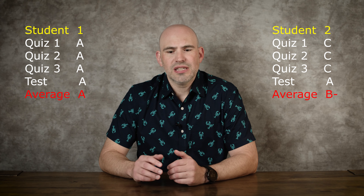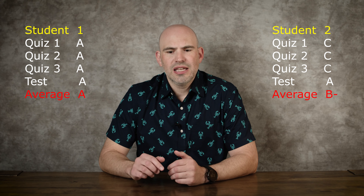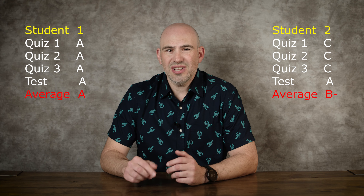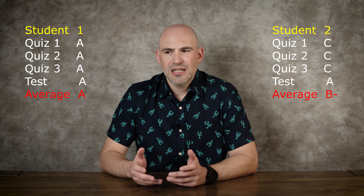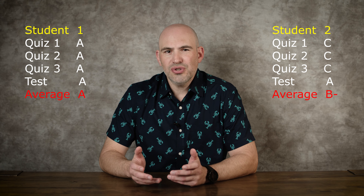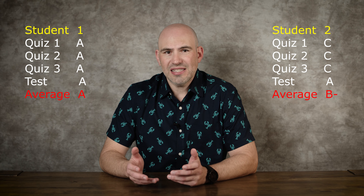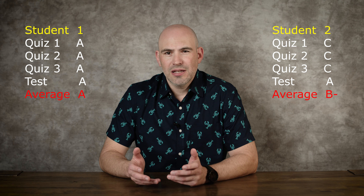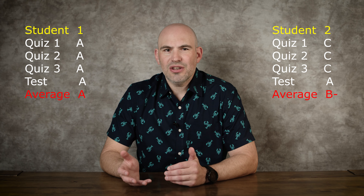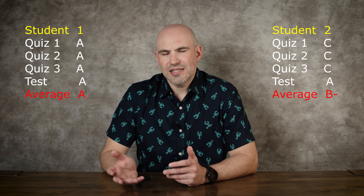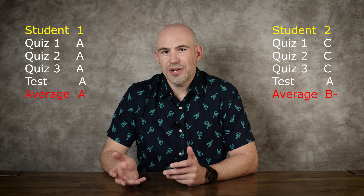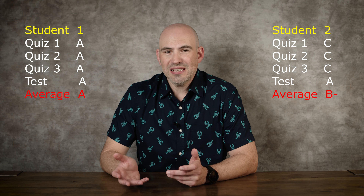So we would average those three C's and that A to come up with the kid's grade. My question is, if all of the information on those quizzes was on that test, the end product was that the student got an A on the test. So the student at the end knows an A's amount of that material, of that subject. But if their grade is a low B, their grade is saying they know a low B's amount of that subject — but in reality, they know an A's amount.